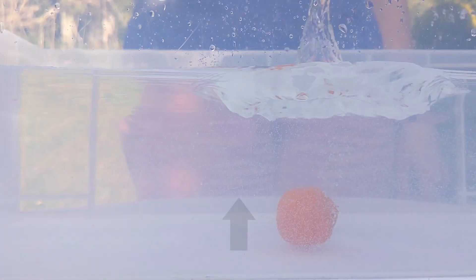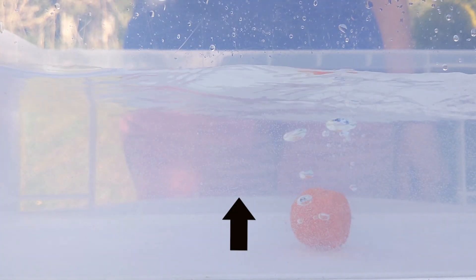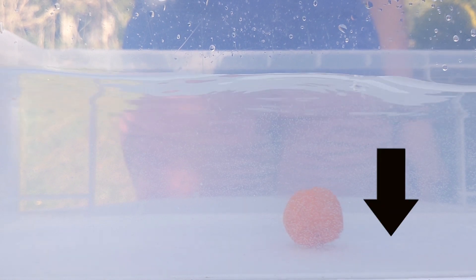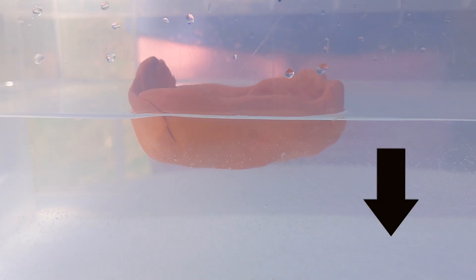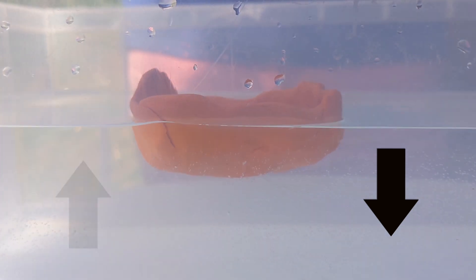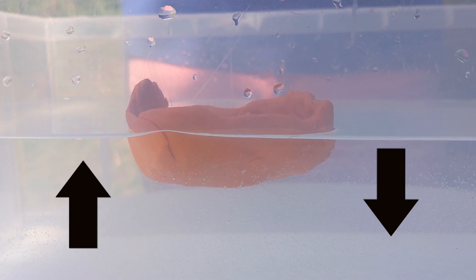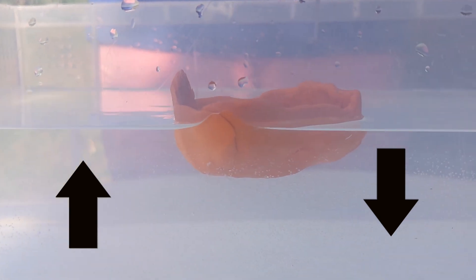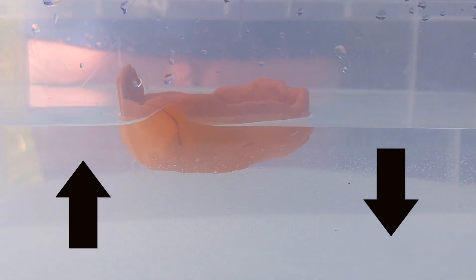When your plasticine was a ball the force of the upthrust pushing up was weaker than the force of gravity pulling down. By flattening the shape and adding the sides you have increased the upthrust. Upthrust and gravity are now balanced and so the boat floats. Well done!